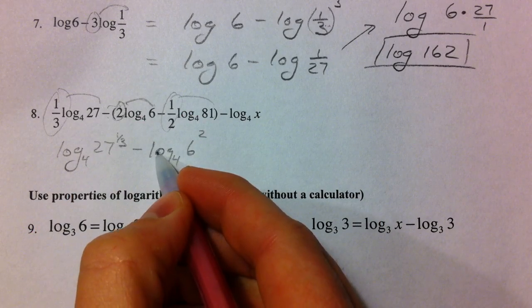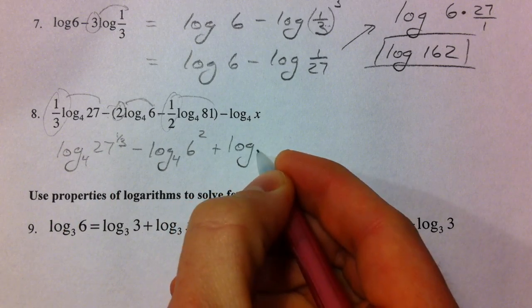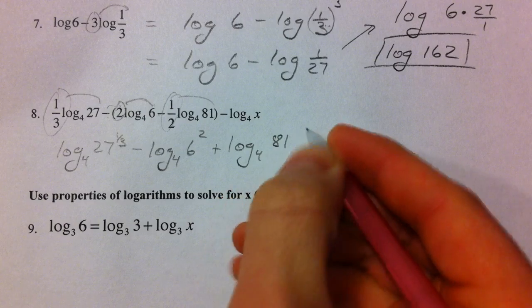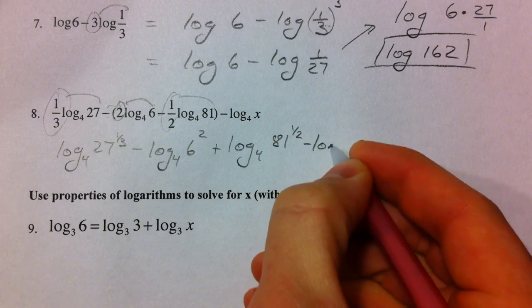So it's minus the log and minus the negative, so I'm going to add log base 4 of 81 to the 1/2, and then subtract log base 4 of x.